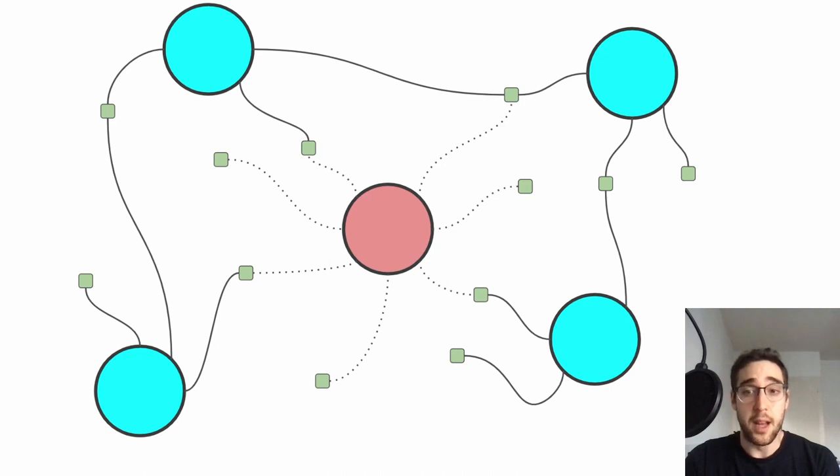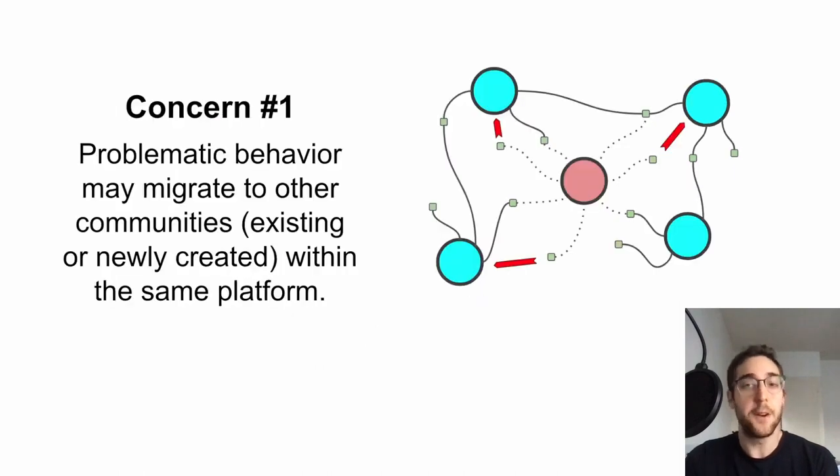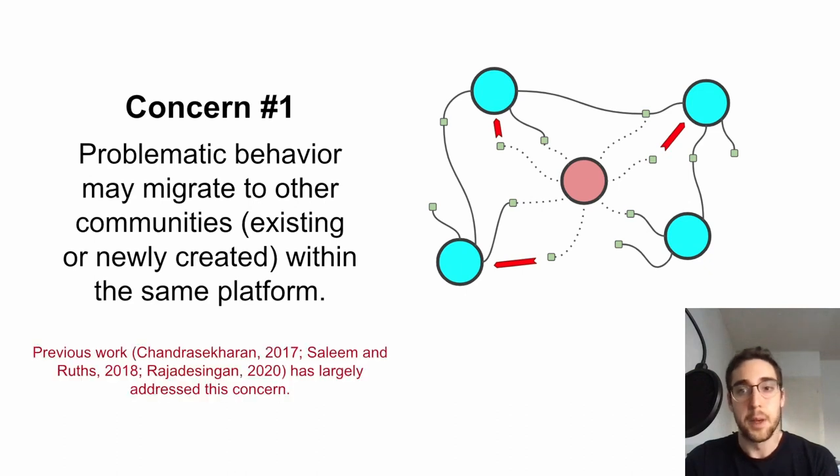At times, online platforms consider that an online community is problematic, and then they ban it. However, it is naive to believe that banning a community is a silver bullet. More specifically, two concerns arise. First, it could be that users from the banned community may continue to be active in the same platform. In that scenario, problematic behavior may migrate to other existing or newly created communities in the same platform. Previous work has largely addressed this concern, showing that in Reddit, for example, users from banned online communities drastically reduce their usage of hate speech and that counteractions taken by these users, for example, trying to create new communities, were promptly neutralized.